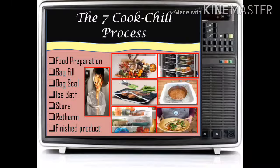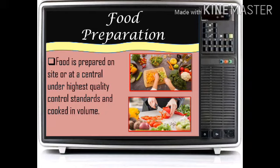The 7 cook-chill process steps are: food preparation, bag fill, bag seal, ice bath, store, rederm, and finished product. Food preparation: food is prepared on site or at a central location under the highest quality control standards and cooking volume. You first need to organize the ingredients — wash them, ready the tools needed for cooking, then properly cut, measure, and arrange the ingredients. Food preparation helps avoid confusion about where you placed the ingredients you bought.